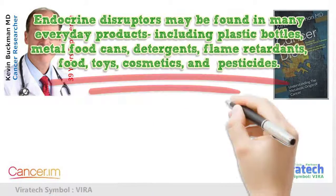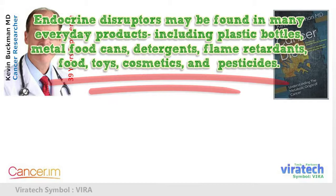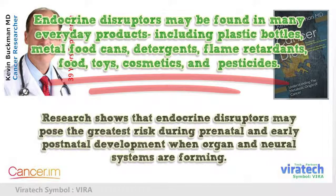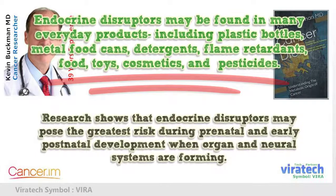Endocrine disruptors may be found in many everyday products including plastic bottles, metal food cans, detergents, flame retardants, food, toys, cosmetics, and pesticides. Research shows that endocrine disruptors may pose the greatest risk during prenatal and early postnatal development when organ and neural systems are forming.